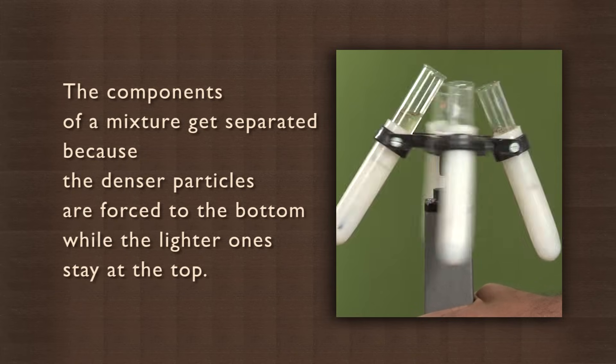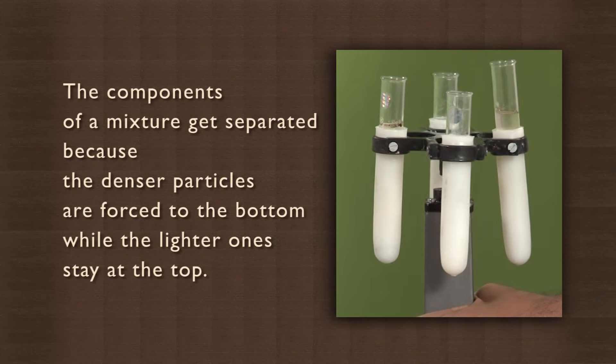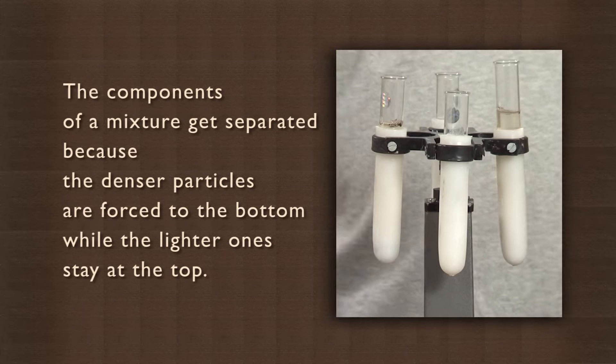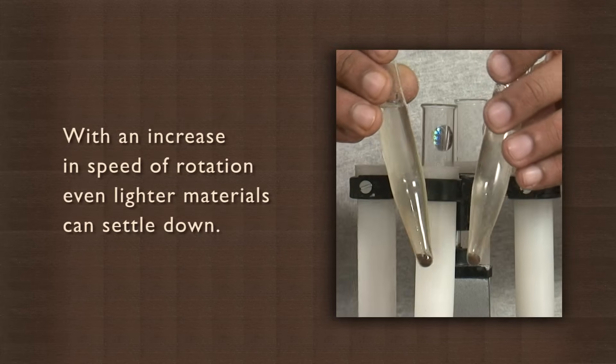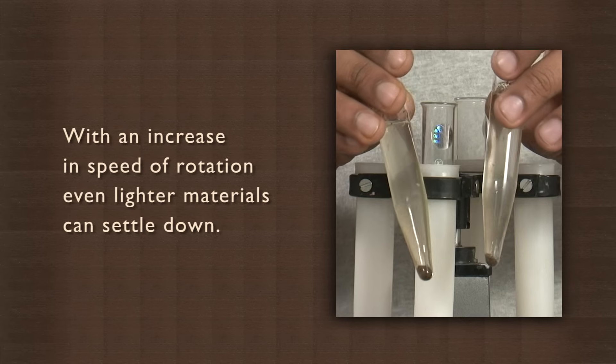The components of a mixture get separated because the denser particles are forced to the bottom while the lighter ones stay at the top. So, with an increase in the speed of rotation, even lighter materials can settle down.